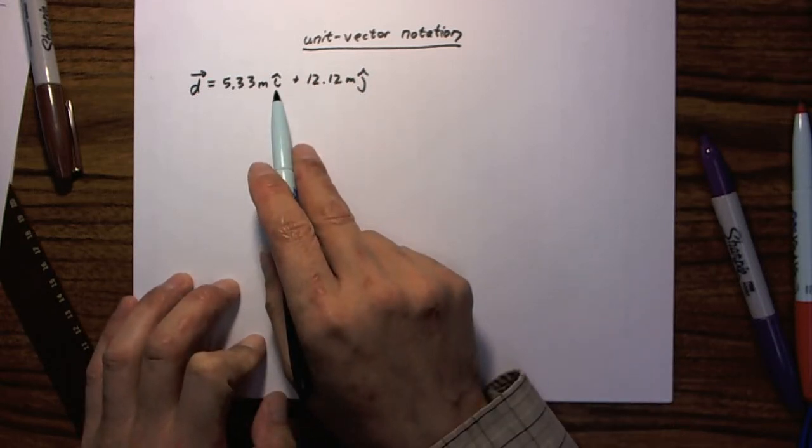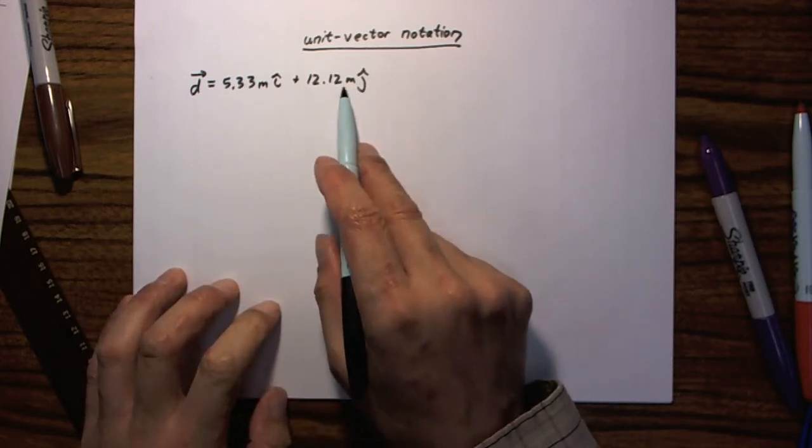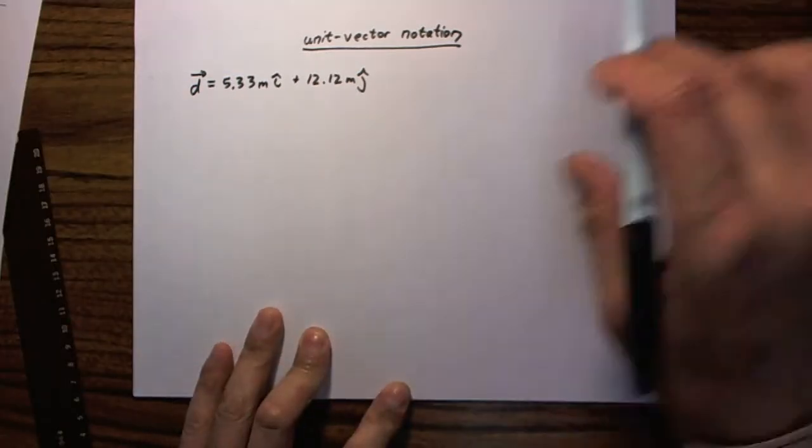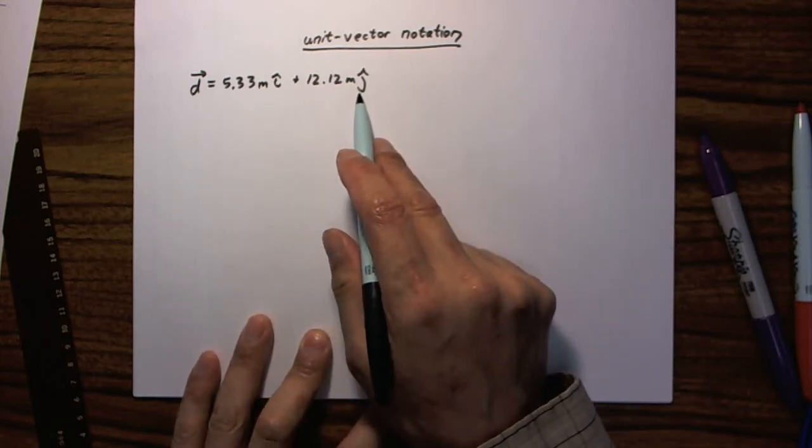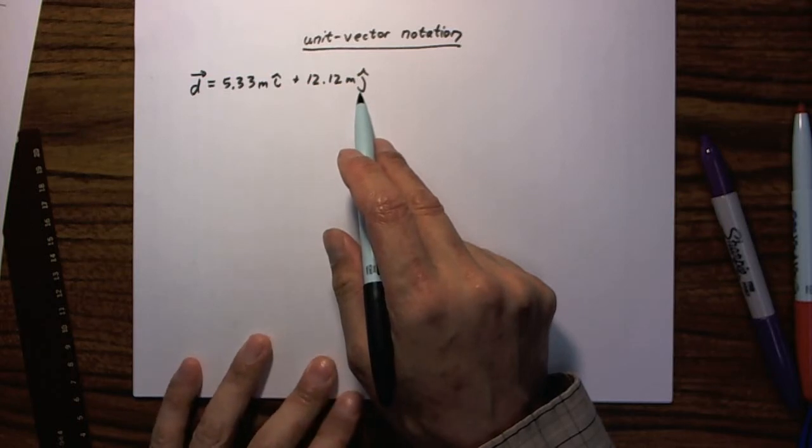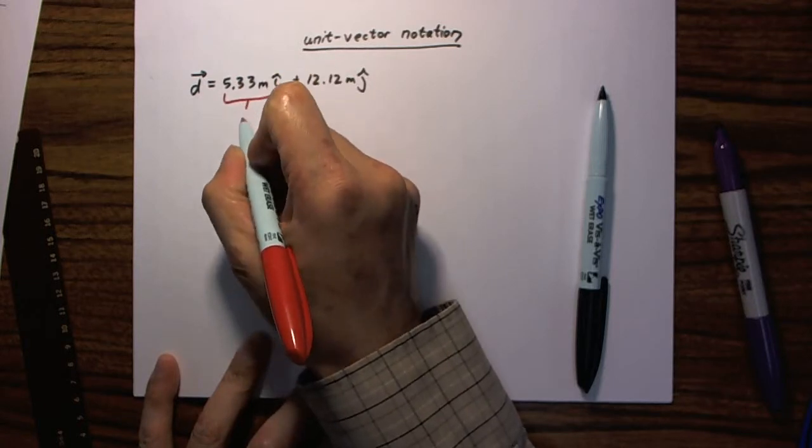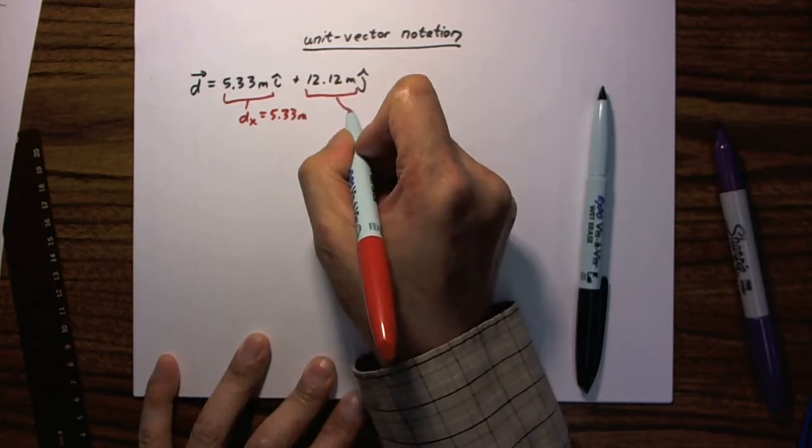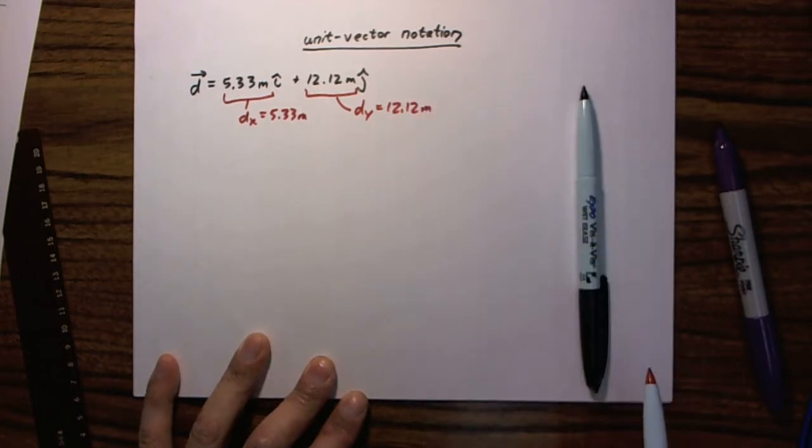Okay. i is a unit vector in the x direction, so whatever comes in front of it is the x component. j is a unit vector in the y direction, so whatever comes before it is the y component. Don't worry if you don't know what a unit vector is. Just know the stuff in front of i, that's the x component. The stuff in front of j, that's the y component. And that's all there is to unit vector notation. So all this means is that dx equals 5.33 meters. And all this means is dy equals 12.12 meters. And from there, we could calculate magnitude and direction.